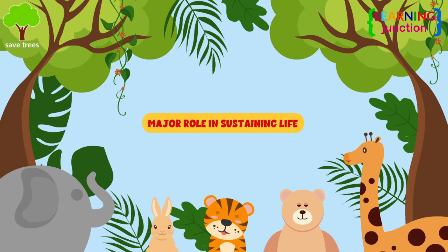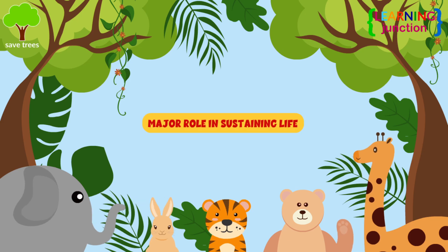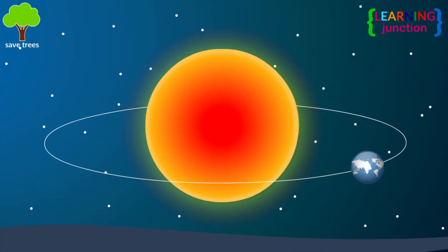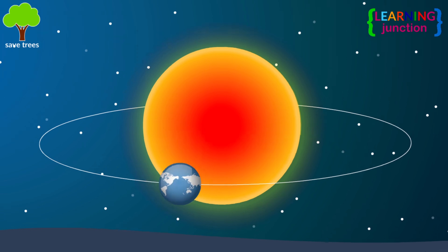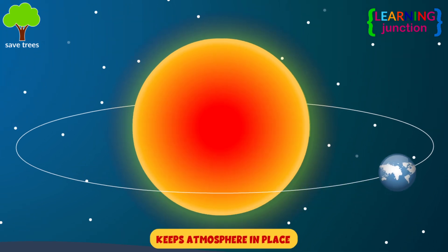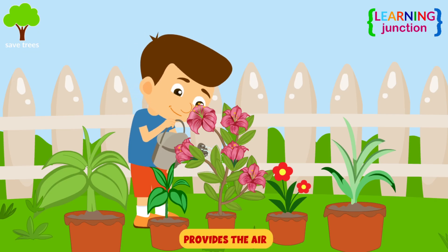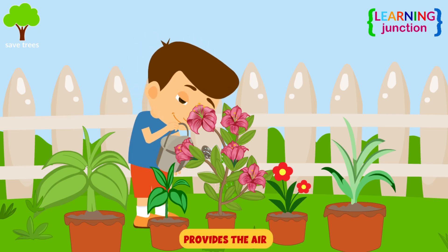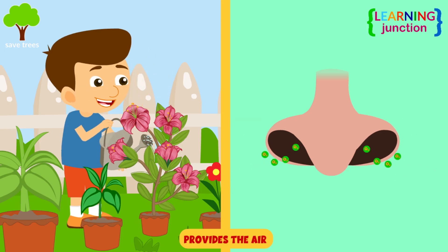Gravity plays a major role in sustaining life on Earth. Because of the gravitational pull between the Earth and the Sun, the atmosphere is kept in place. It provides the air you need to breathe.